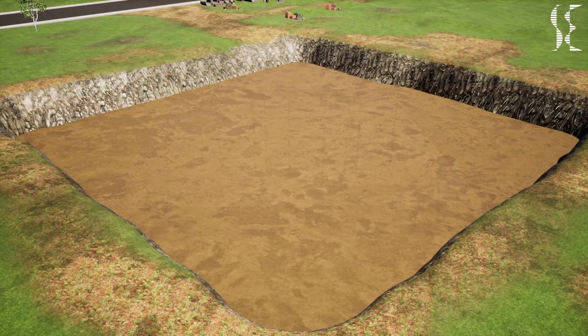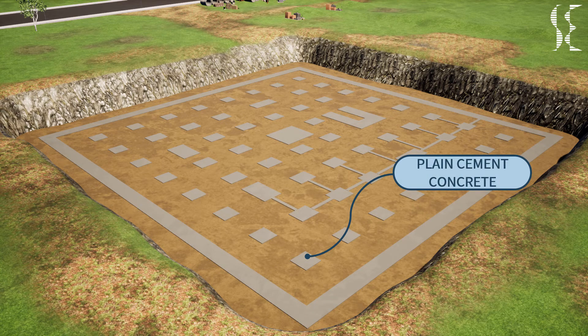Starting from the substructure, first we have plain cement concrete, also termed as PCC. It is a low-strength mixture of cement, fine aggregates (usually sand), and coarse aggregates. The main purpose of PCC is to provide a firm, rigid, non-porous, impervious, and leveled base for RC footings, ground beams, and slab on grade.